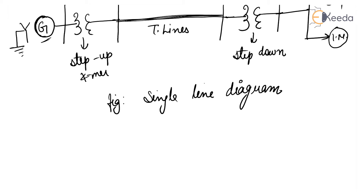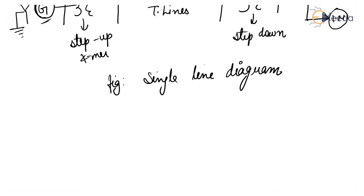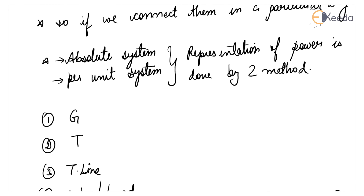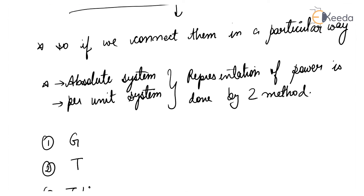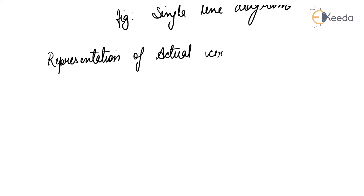We have already studied the single line diagram in detail in chapter number one, so please go through that video. Now we show the single line diagram in two systems. Representation of power is done by two methods: absolute system and per unit system. Let's first see the representation of the actual circuit.